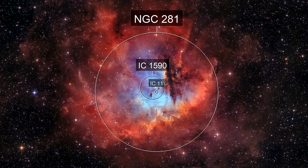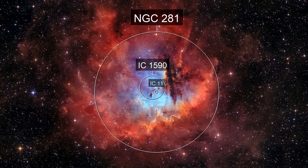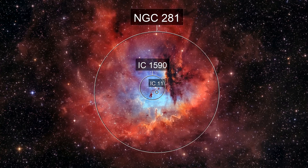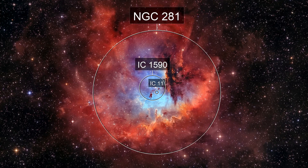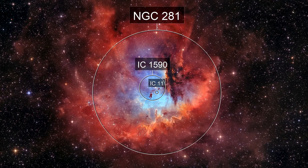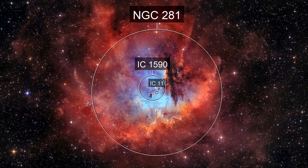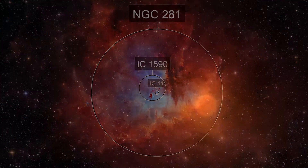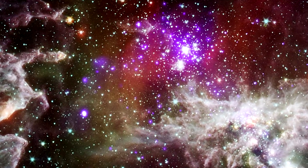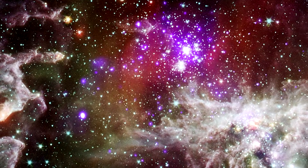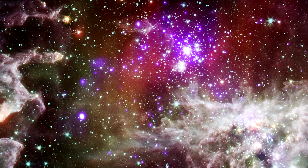The next contender with an unusual shape is the scattered star cluster NGC-1590 in the central region, which has formed over the past few million years. The brightest star in this cluster is a multiple system. Its radiation ionizes the gas in the nebula, and therefore it acquires a reddish glow.